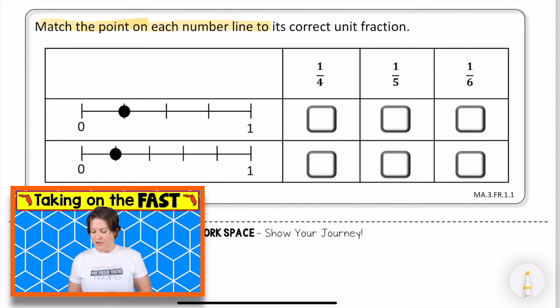So it says, match the point on each number line to its correct unit fraction. So we've got the number lines in these two boxes, and we need to match it with the other fractions. And by the way, a unit fraction means that we have to have what in the numerator? A one, right? And as you can see, all of these answer choices, one fourth, one fifth, and one sixth, all have a one in the numerator. So they are all unit fractions.